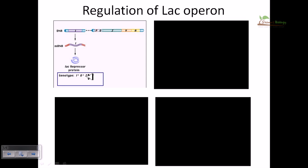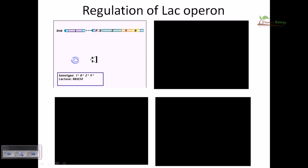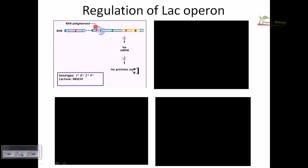In the wild-type case, the genotype is all positive — we have the right type of repressor gene, operator gene, and structural genes; no mutations. If lactose is absent, the repressor binds tightly to the operator region, so RNA polymerase cannot initiate transcription of the Z, Y, A structural genes. No mRNA is made, so no beta-galactosidase is produced — the lac operon is repressed.